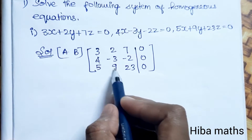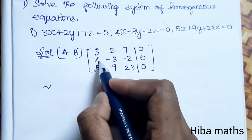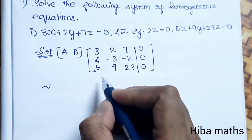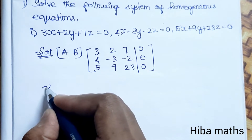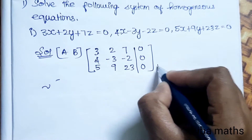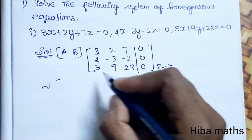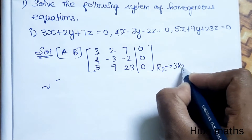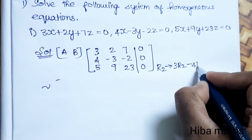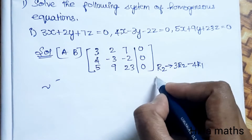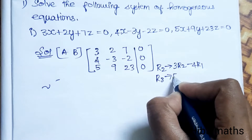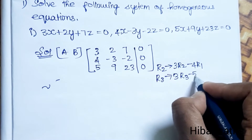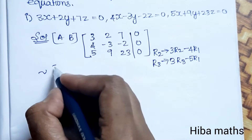Now we compare the leading elements. Row 1 starts with 3, row 2 with 4, row 3 with 5. To eliminate, we apply row operations: R2 changes to 3 times R2 minus 4 times R1. R3 changes to 3 times R3 minus 5 times R1.